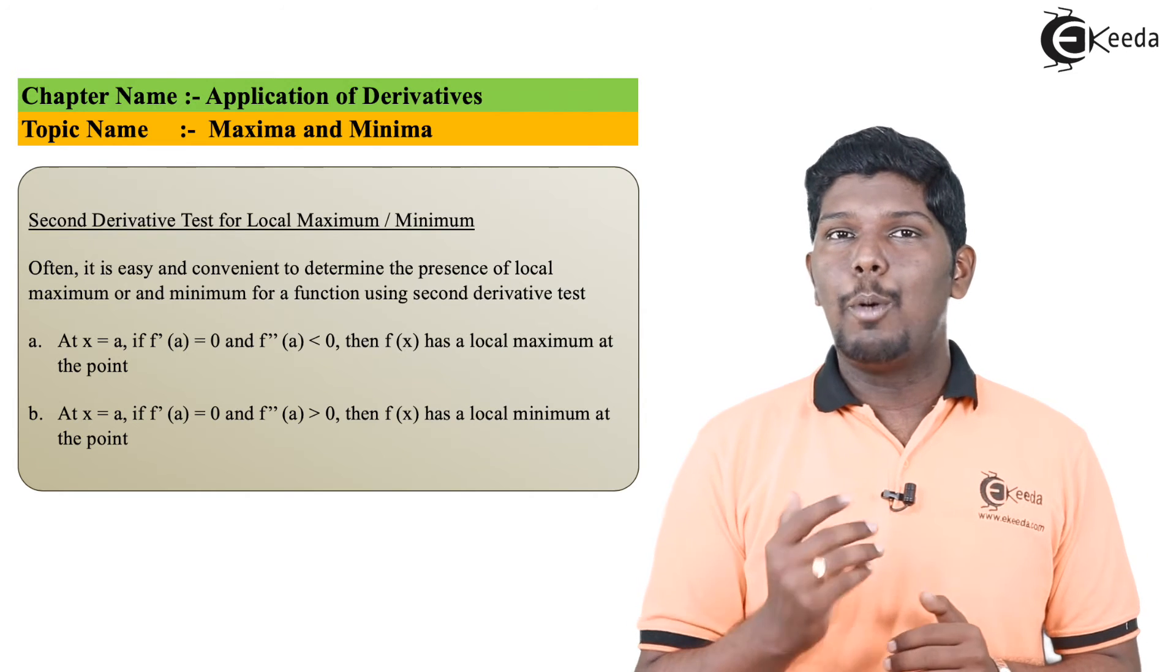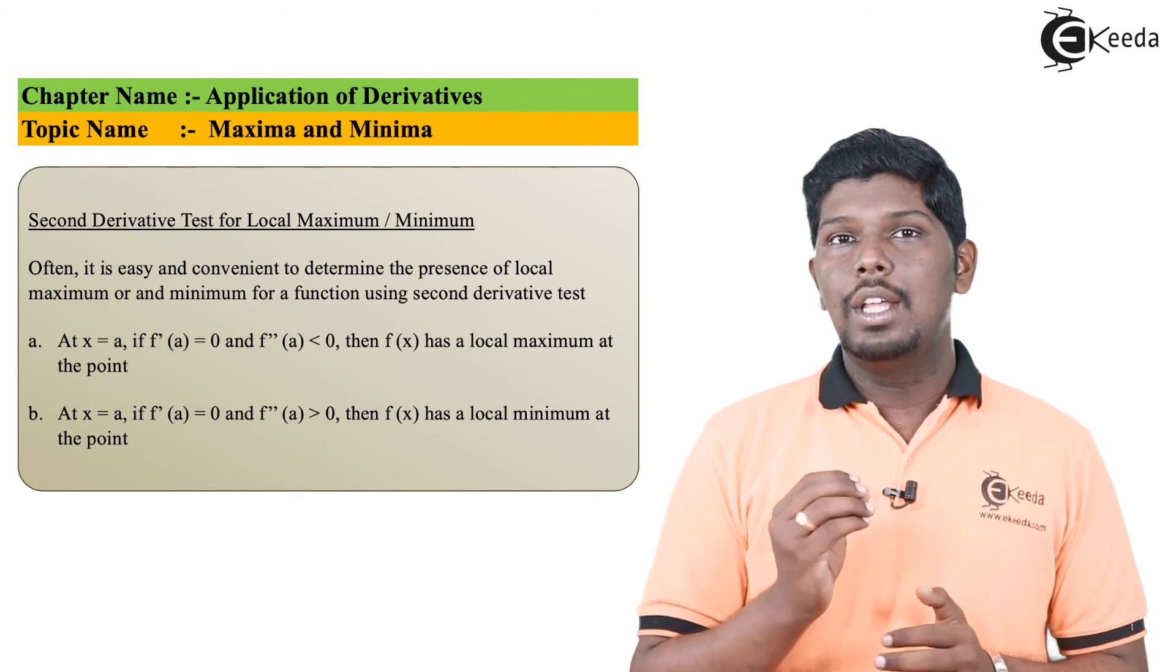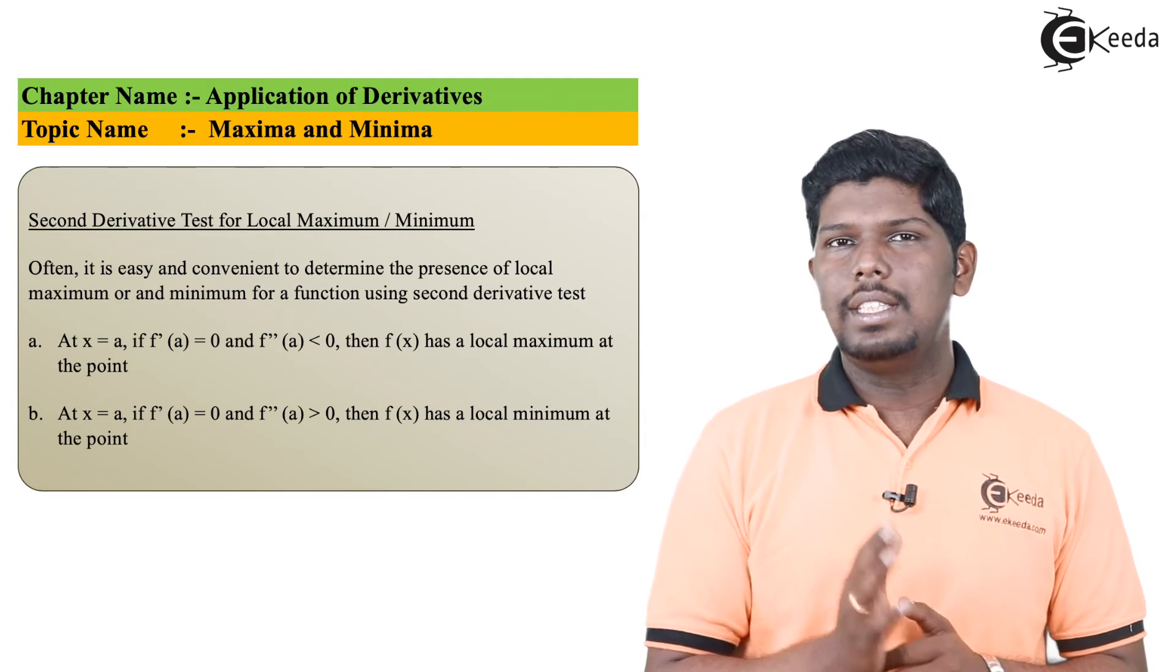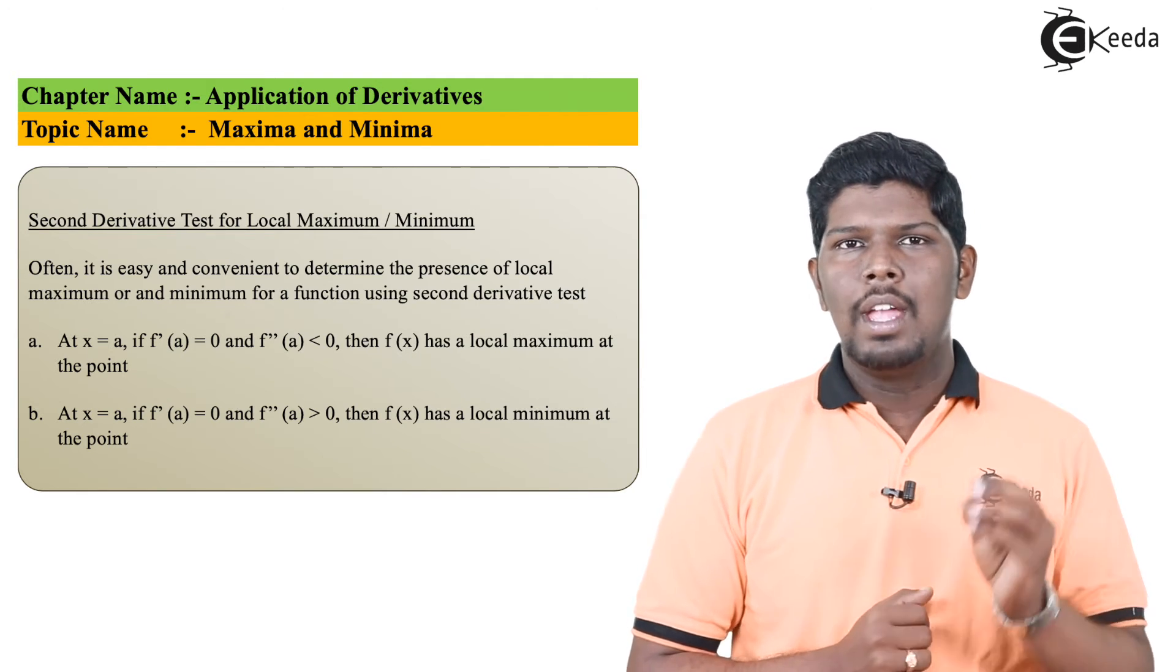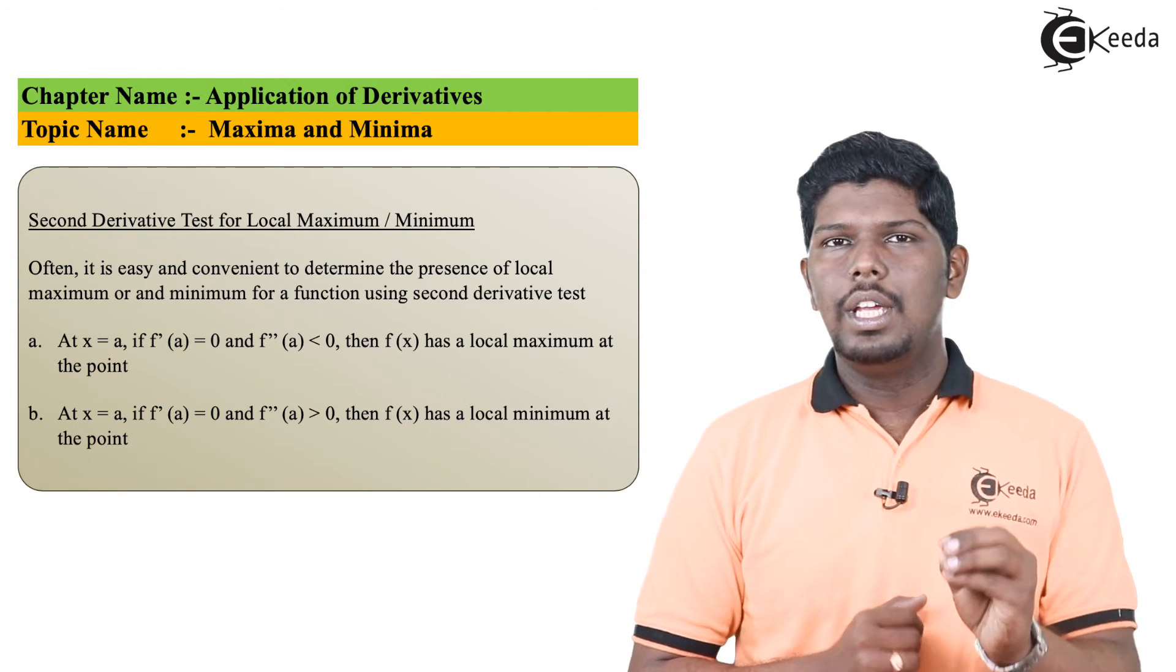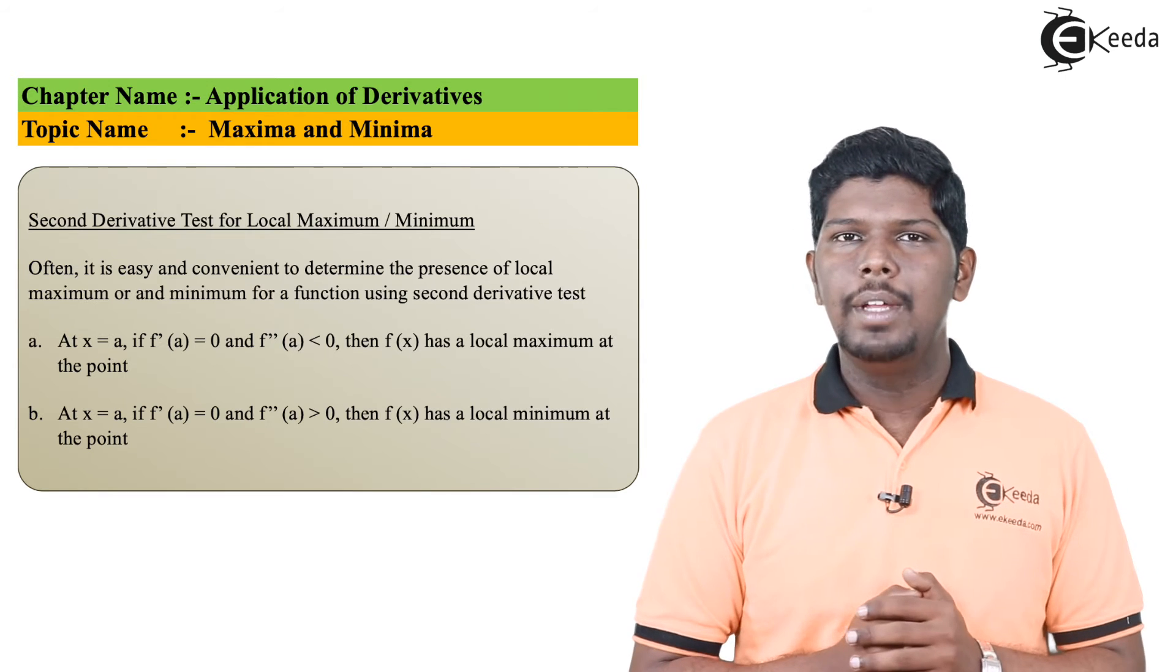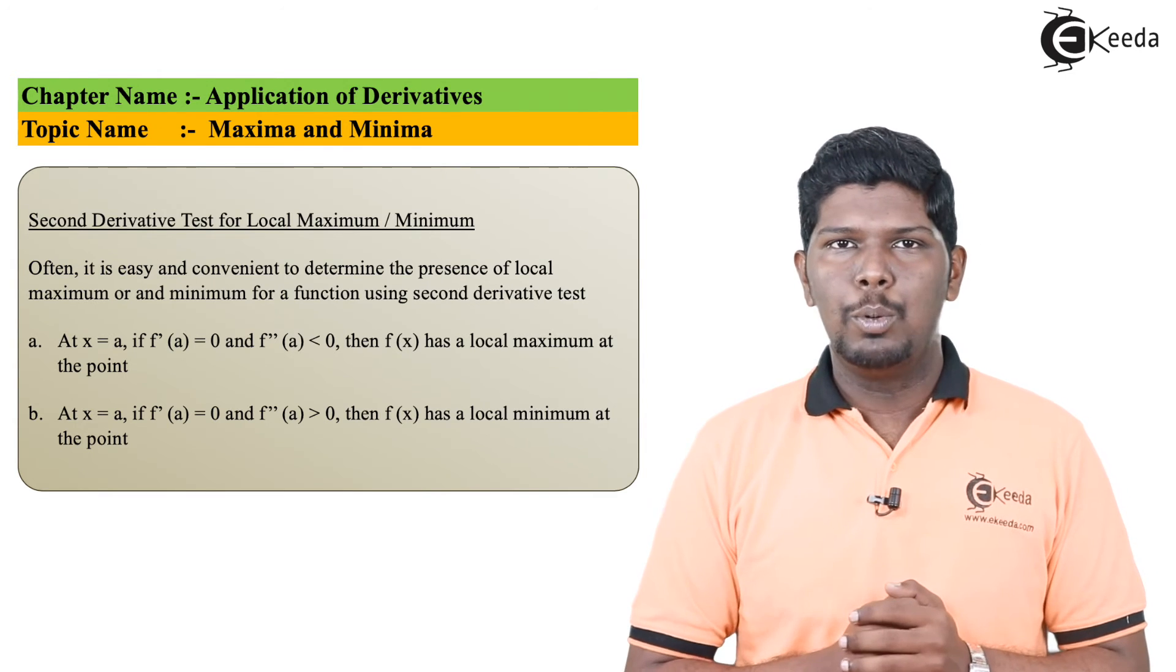And if you are getting a positive answer, it means the function is minimum at that point. So the second derivative test is quite easy to analyze. After substituting these values, if you get a negative answer, it means we have a maximum output, and if you get a positive outcome, it means we have a minimum output.